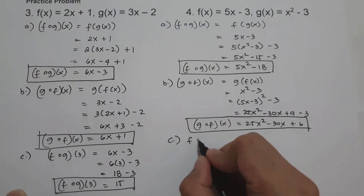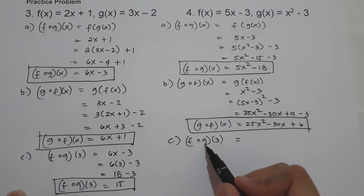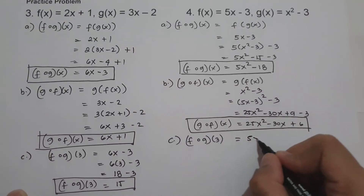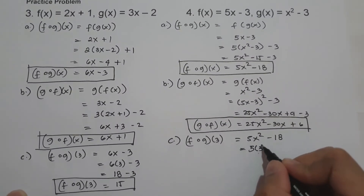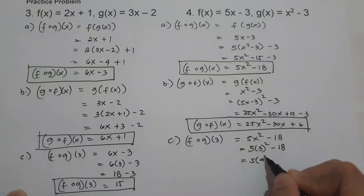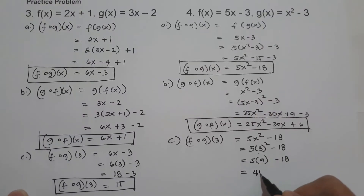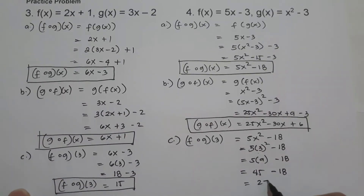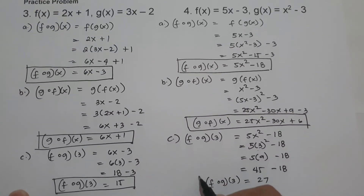On letter c, we have f circle of g of 3. Since we know f circle of g of x is 5x squared minus 18, all we have to do is substitute x equals 3. So this will be 5 times 3 squared minus 18. 3 squared is 9, and 5 times 9 is 45, minus 18, and that is 27. And this will be the value of f circle of g of 3, and this will be our answer.